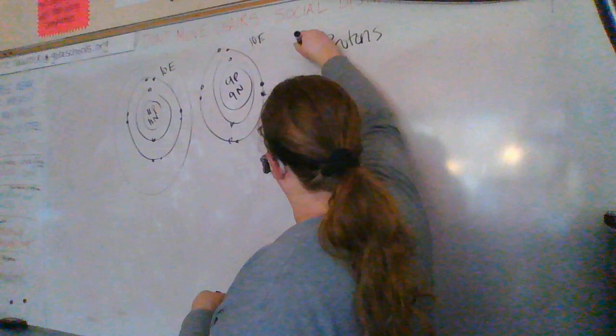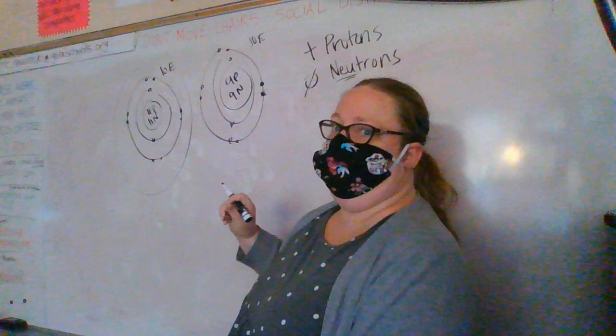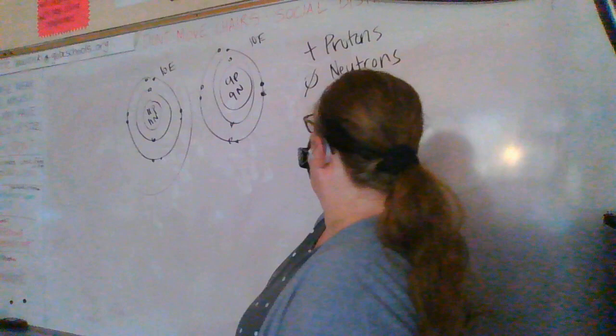Neutrons is neutral. Neutrons are neutral. So what are electrons? Electrons. What charge do they have? Negative. This is the important part here. Electrons are negative.